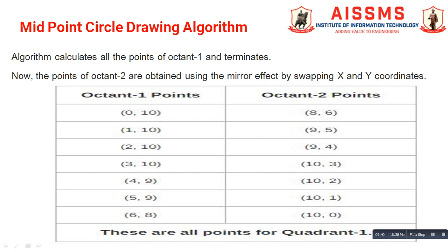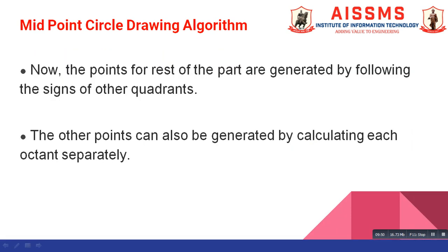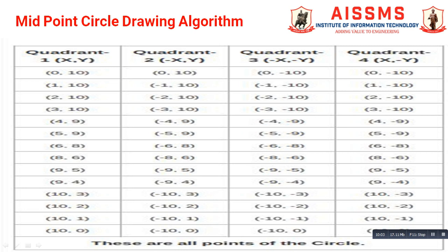Similarly, we swap all points using the mirror effect. The points for the remaining parts of the circle are generated by following the signs of the other quadrants, and the other points can also be generated by calculating each quadrant separately. By applying reflective quadrant signs to the calculated points, we obtain all the points for the given circle. Thank you for watching.